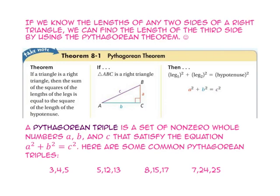If we know the lengths of any two sides of a right triangle, we can find the length of the third side by using the Pythagorean Theorem. The Pythagorean Theorem states that if a triangle is a right triangle, then the sum of the squares of the lengths of the legs is equal to the square of the length of the hypotenuse. So, a squared plus b squared equals c squared.